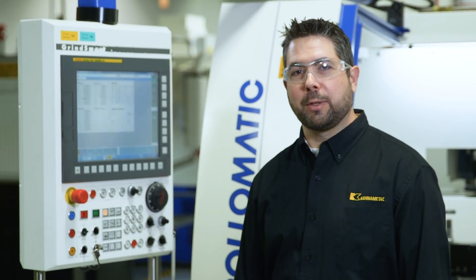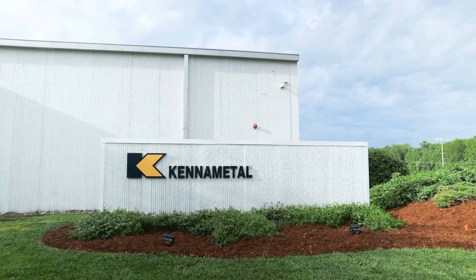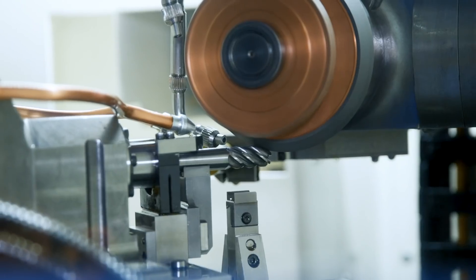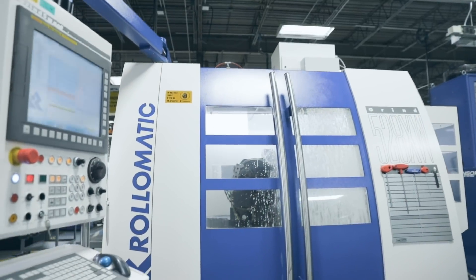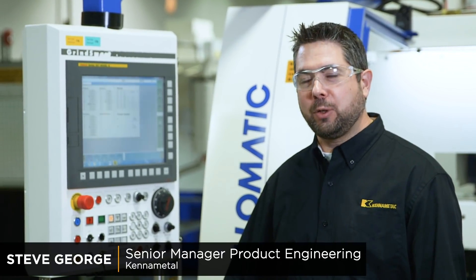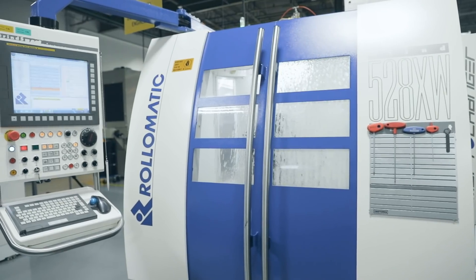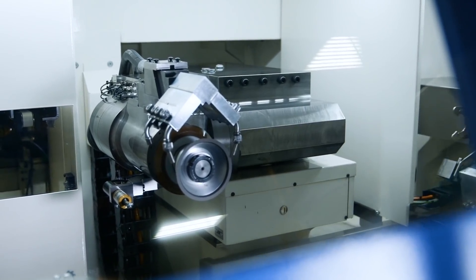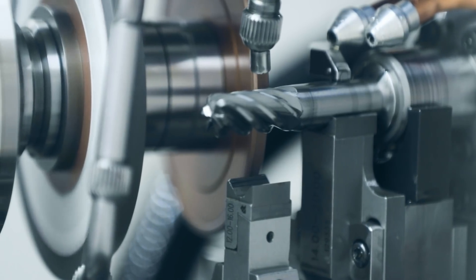Welcome to Kennametal in Ashboro, North Carolina. We have a Roll-O-Matic 528XW, a 5-axis machine with a wheel changer. We're going to show you what it's like to grind a Harvey III end mill.